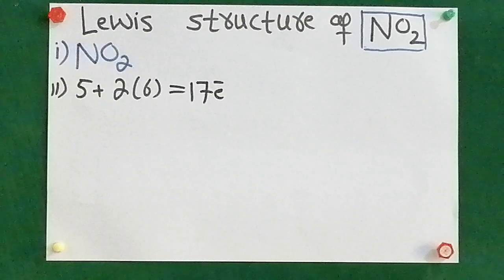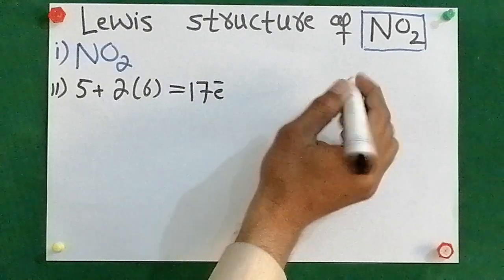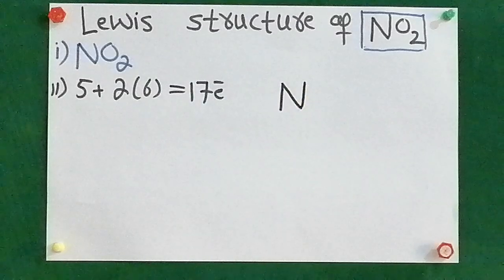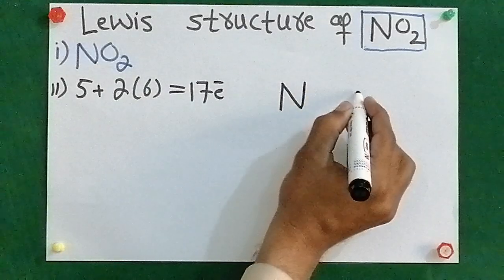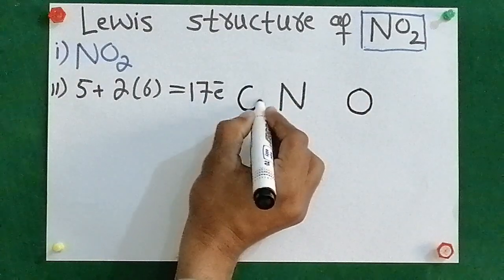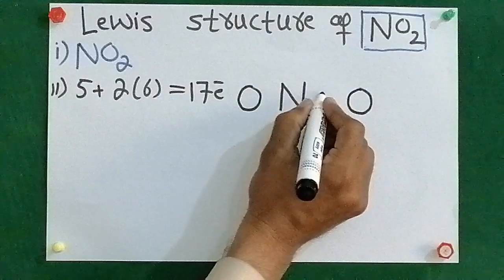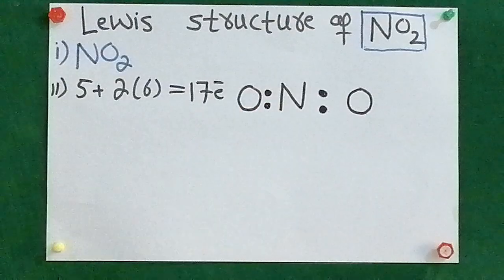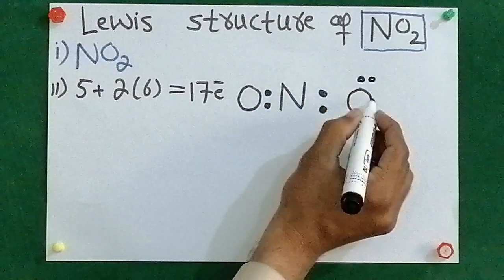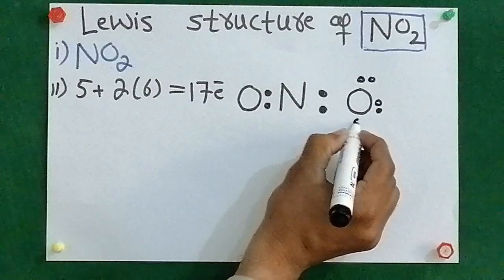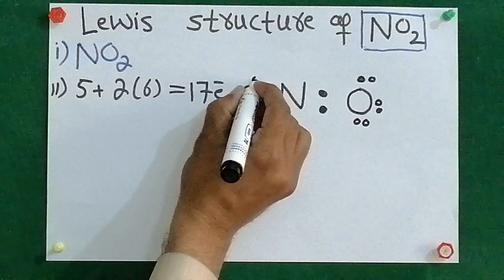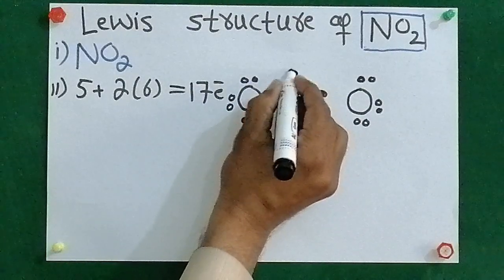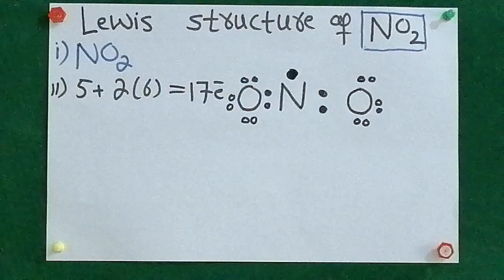We have a total of three atoms and we have to put 17 electrons in between these three atoms. Number one is nitrogen, then oxygen and oxygen. First I will put two dots between these atoms, which represents one bond: two, four, six, eight, ten, 12, 14, 16, and 17. So here a total of 17 electrons have been fulfilled.